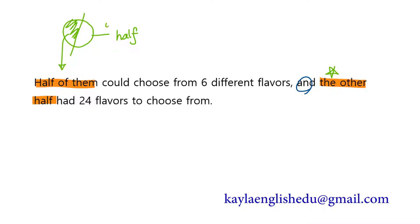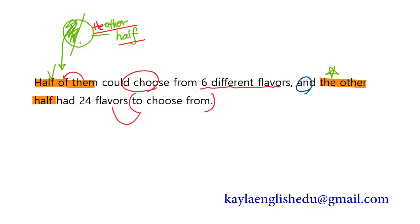딱 두 부분으로만 나눠놓았기 때문에 나머지 half는 어떤 건지 이미 정해진 거죠. 정해진 것 앞에는 정관사 the가 붙어서 the other half가 됩니다. 나머지 절반은 선택할 24개의 맛을 가지고 있었다. 여기서 왜 to choose from처럼 전치사로 끝나는가를 고민해볼 건데요.